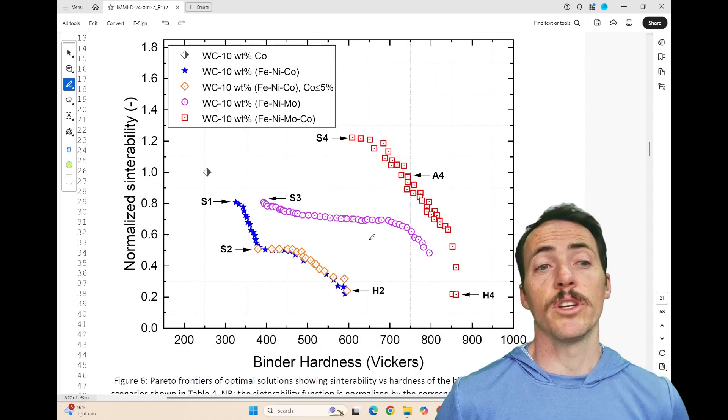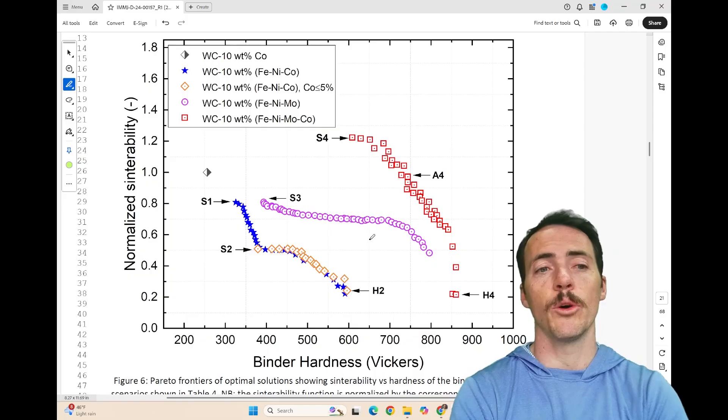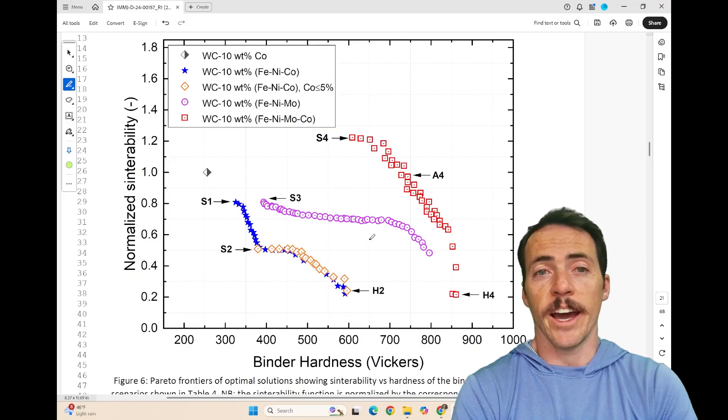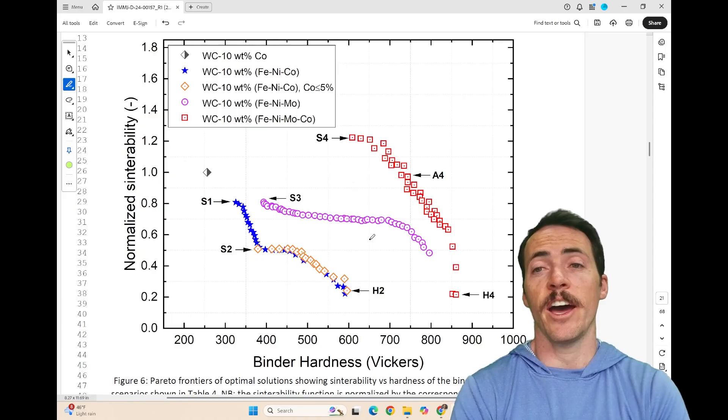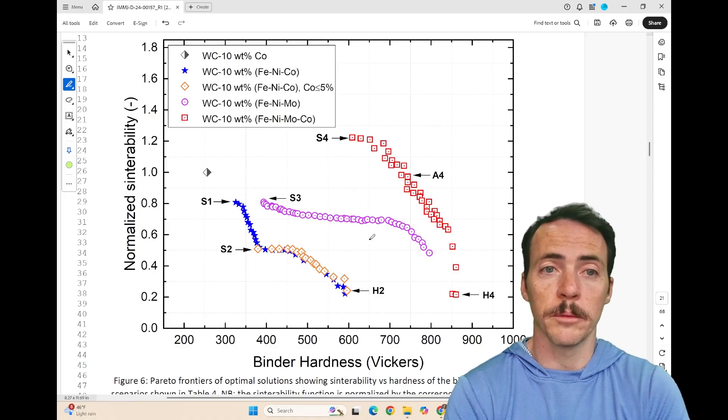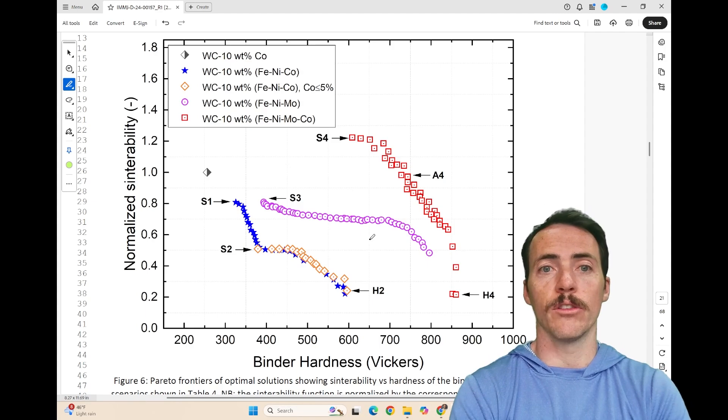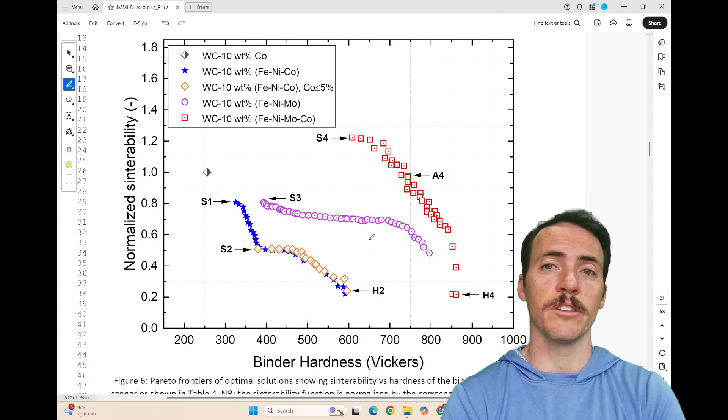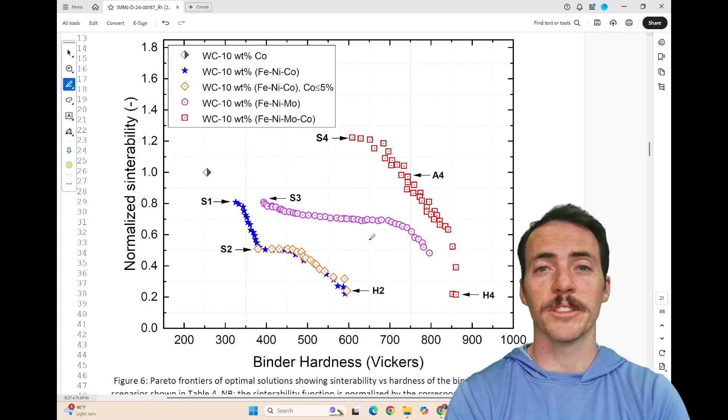So what were the real takeaways? You can see for yourself, on a plot like this showing you both the sinterability and the hardness, we can find actual new materials. And they have reduced cobalt, or in some cases, no cobalt. Iron-nickel-molybdenum, for example, or the iron-nickel-moly cobalt system, where you're getting sort of improved possibilities by doing this computational-based approach.